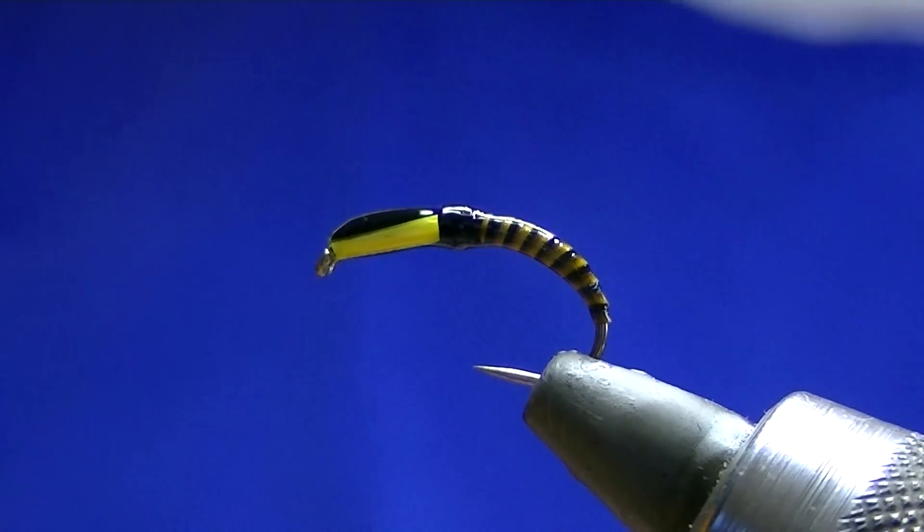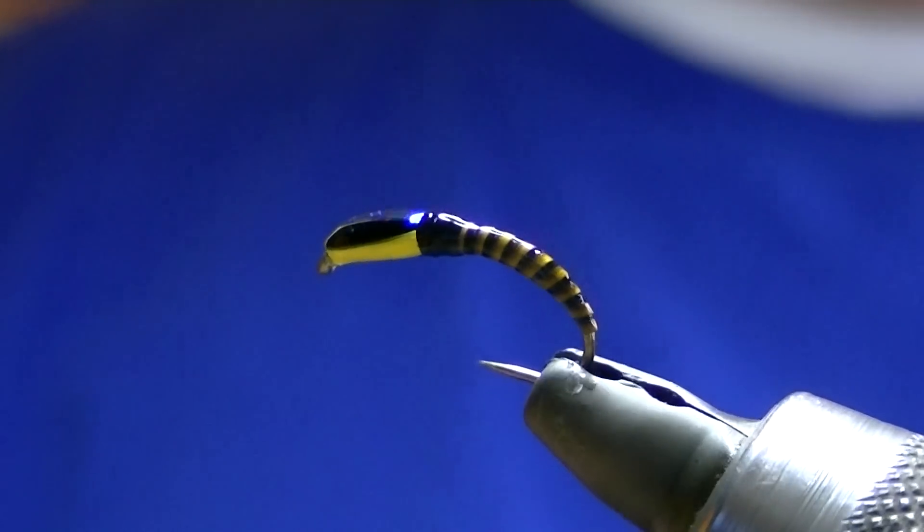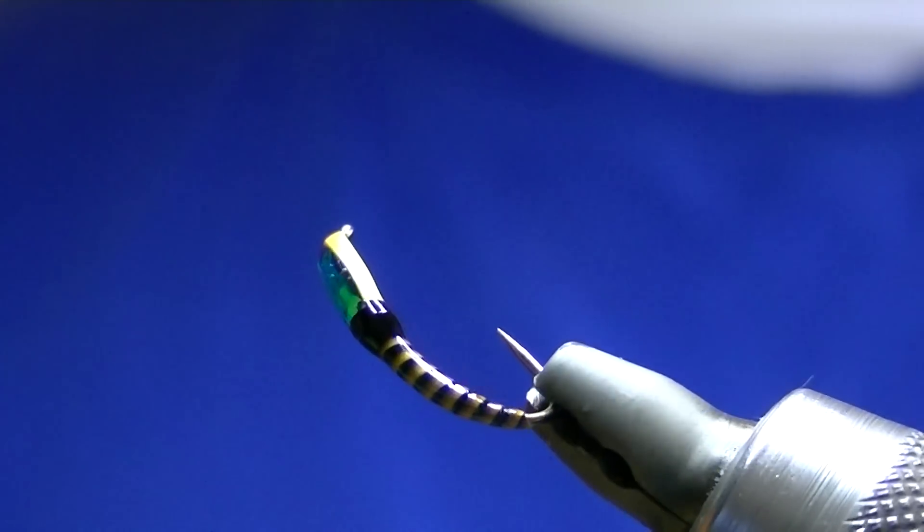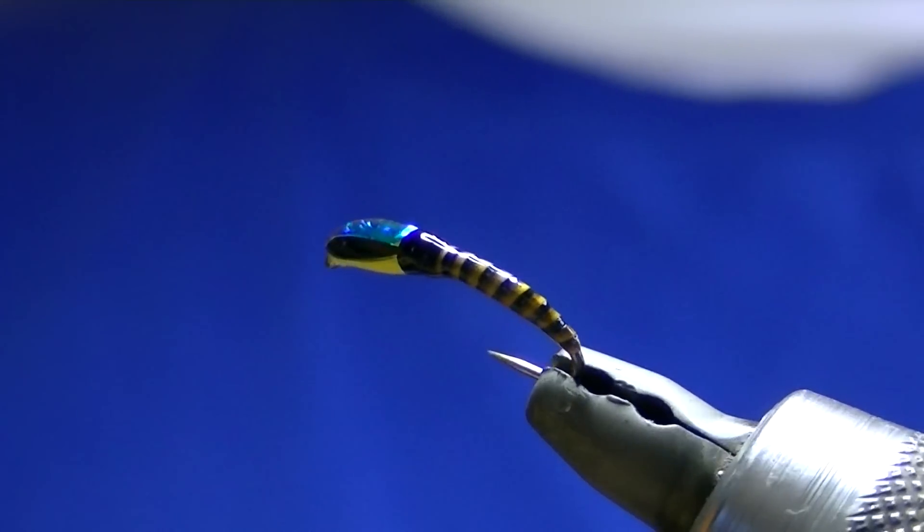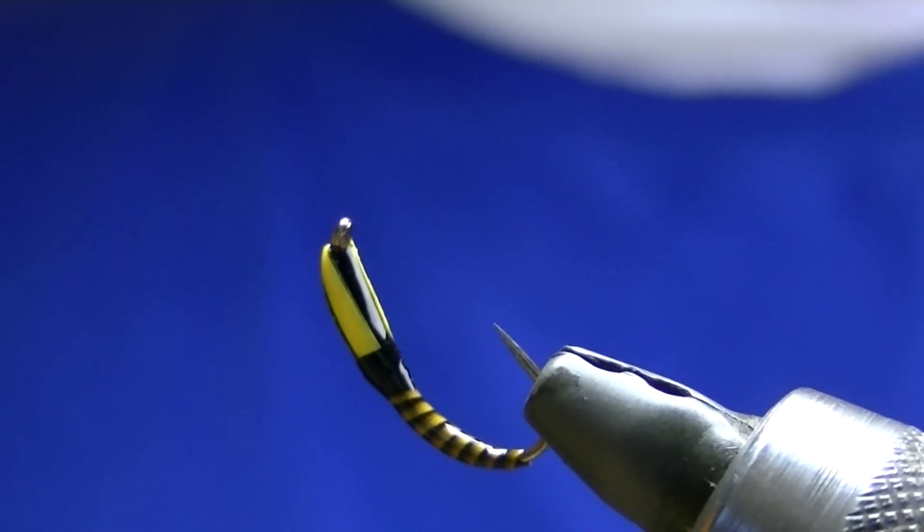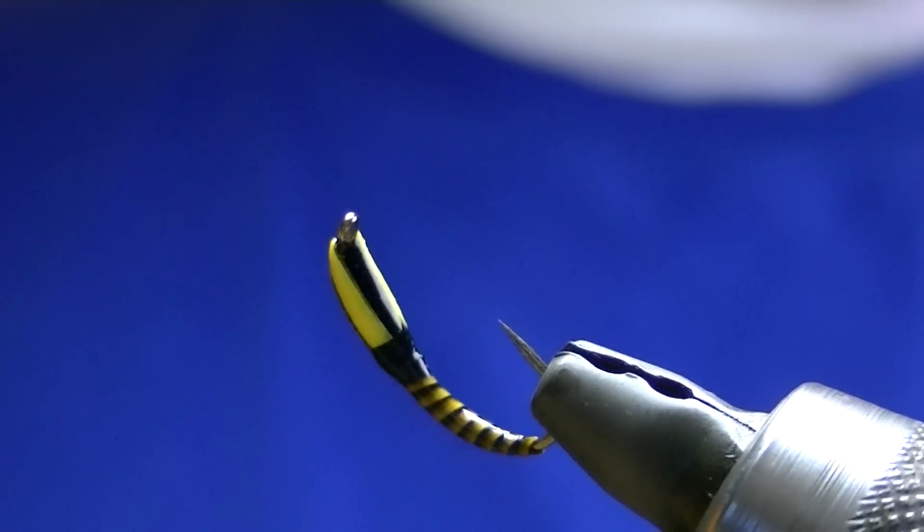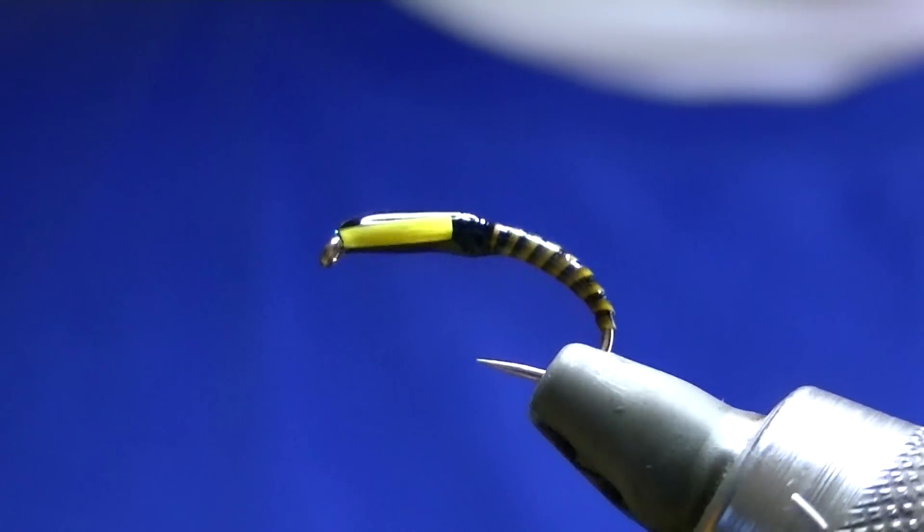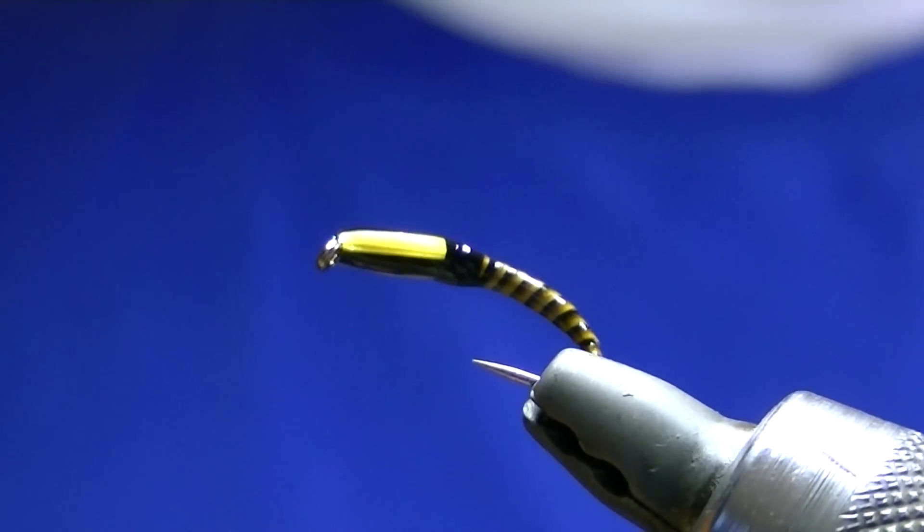There you go. You can see the shape of it as well, and the pearl on the back, the biots. You can see what it will look like once it's finished. Once it's completely dry and it's got another couple of coats, it will be really, really smart. It will sink like a stone.